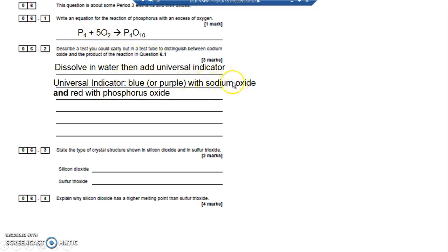State the type of crystal structure shown in silicon dioxide. Well, silicon dioxide, sometimes called silica, is the main constituent of sand, and it's got a large macromolecular structure - a giant covalent or macromolecular structure, a bit like diamond, where it's all held together by strong covalent bonds.